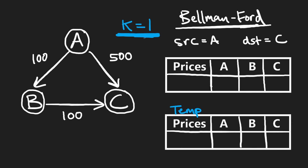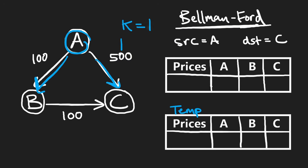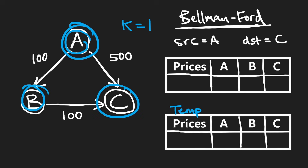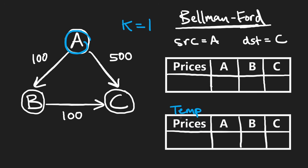Since K equals 1, you might think we only do one layer of BFS — but we actually do K plus 1 layers. That's just how the problem is defined: K stops between start and destination, so K plus 1 edges traversed. You're probably wondering why I have a second temporary prices array — I'll explain that more in a moment. For now, focus on the general idea.